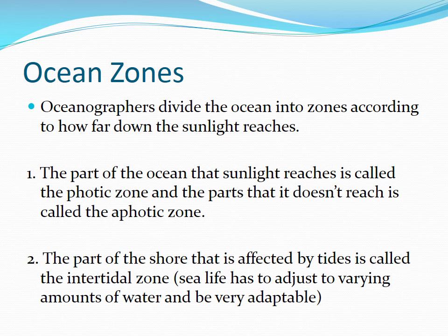The part of the shore that is affected by tides is called the intertidal zone. In this zone, that's where the waves are crashing on the beach, and sea life here has to adjust to varying amounts of water and be very adaptable. During high tide the sea life has to be able to handle more water, and during low tide they have to handle less water.